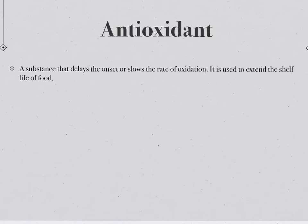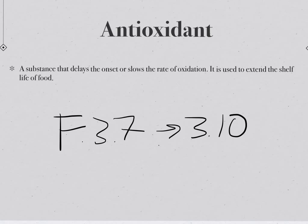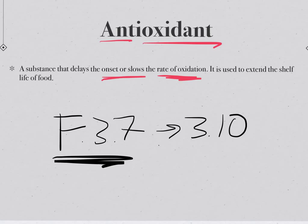Here we are back with food chemistry. We're going to be finishing the last of content F3 — specifically F3.7 through 3.10, the last standards under F3. First, we have to define the term antioxidant. An antioxidant, as the name says, reduces or slows the rate of oxidation. It either slows or delays the onset of oxidation, extending the shelf life of food.